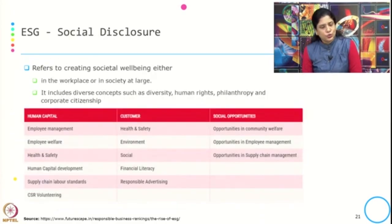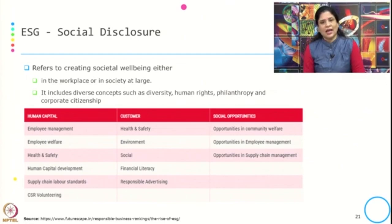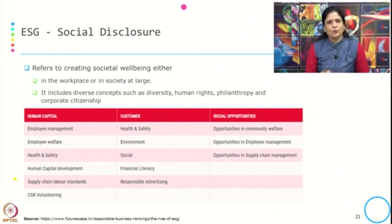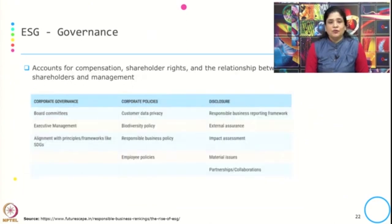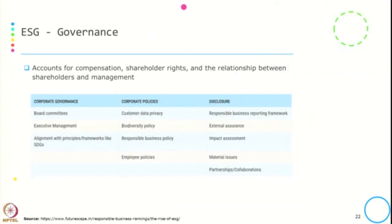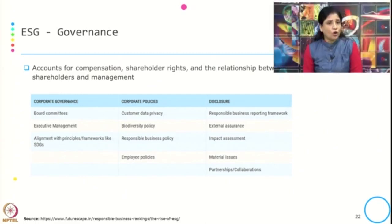The Social (S) component refers to creating social well-being in the workplace and in society at large, covering diverse concepts such as diversity, human rights, philanthropy and corporate citizenship — organized under the broad heads of human capital, customer and social opportunity. The Governance (G) component accounts for compensation, shareholder rights and the relationship between shareholders and management, covered under corporate governance, corporate policy and disclosure.